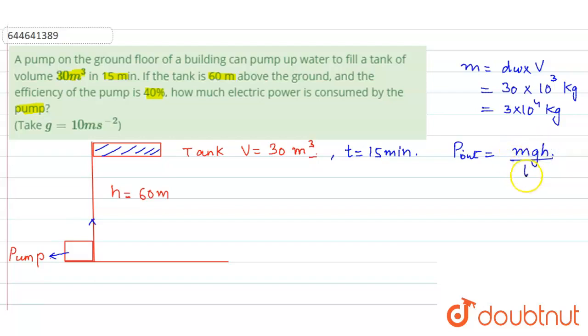So now let's say that m is 3 into 10 raised to the power 4 and g is 10, it is mentioned in the question, and the height is simply 60 meter divided by the time is 15 minutes, so this is 15 into 60. So from here we get the output power of the pump is simply, if we convert that into kilowatt also, the output power is 20 kilowatt.